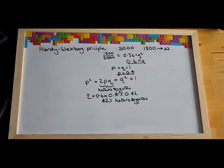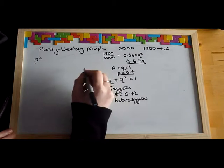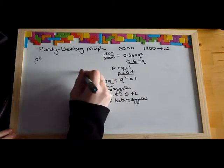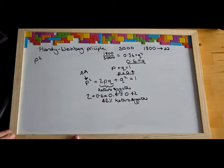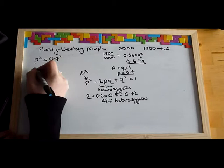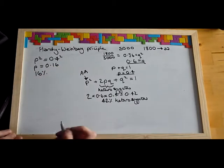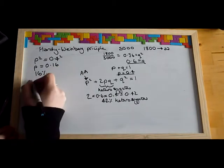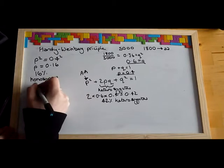The next part of the question could be to calculate the percentage of the dominant homozygotes — that's the people with P squared. P squared equals 0.4 squared, which equals 0.16. So 16% of the population are homozygous dominant.